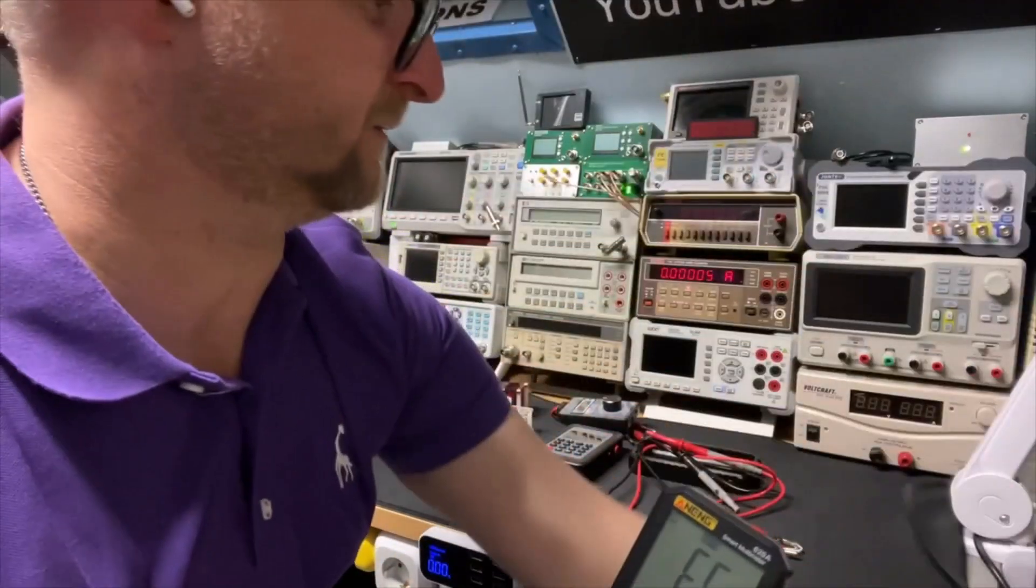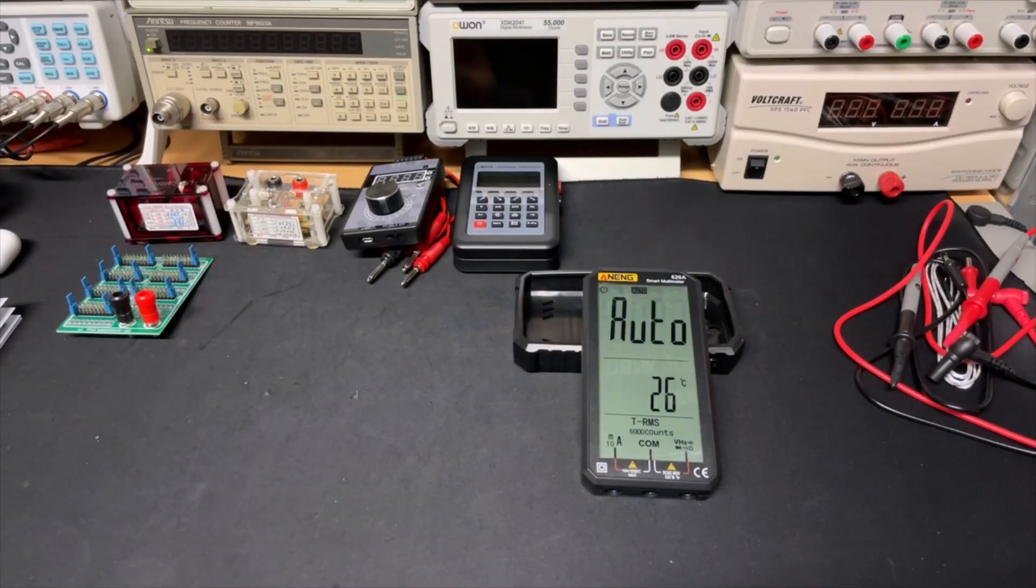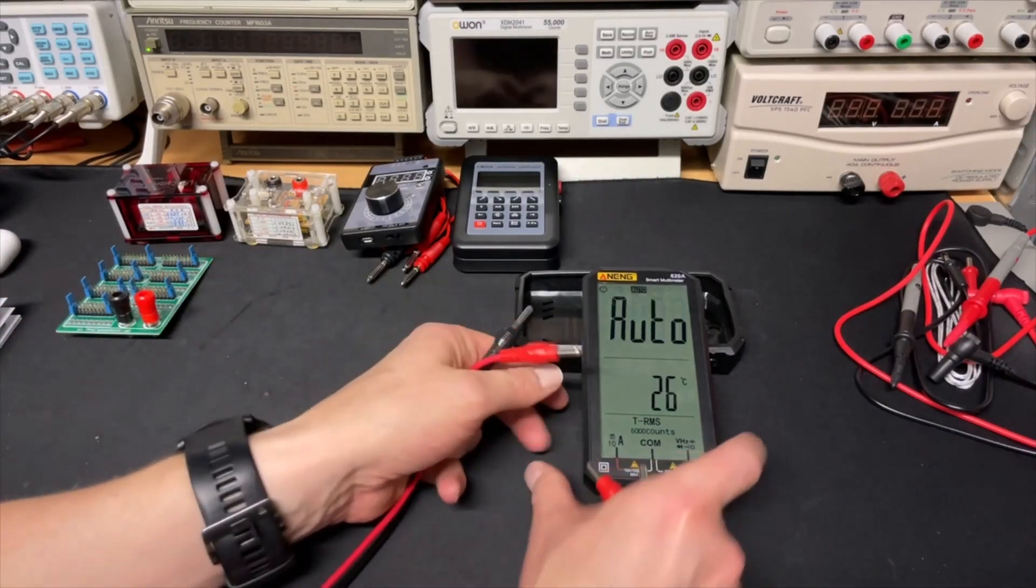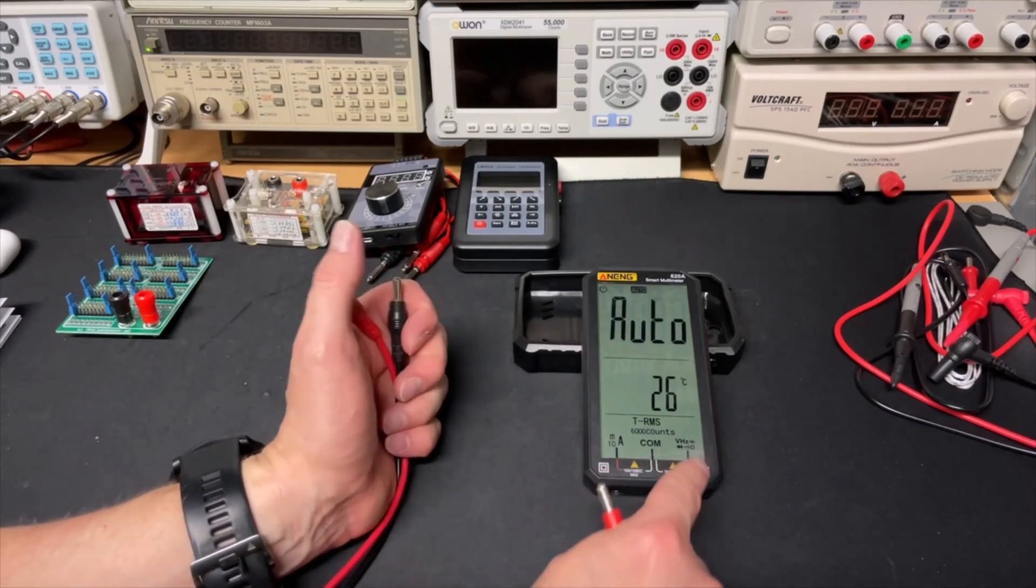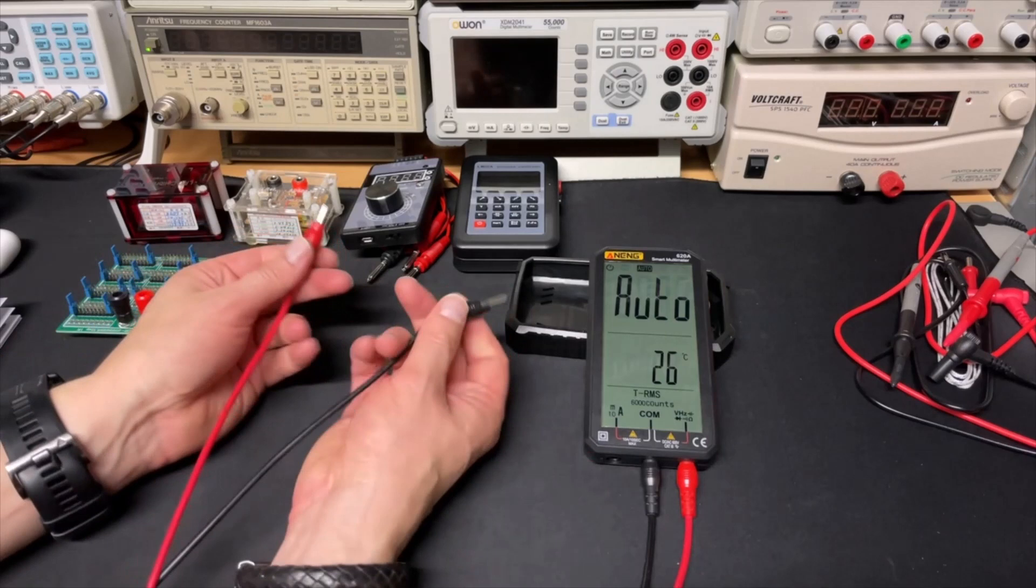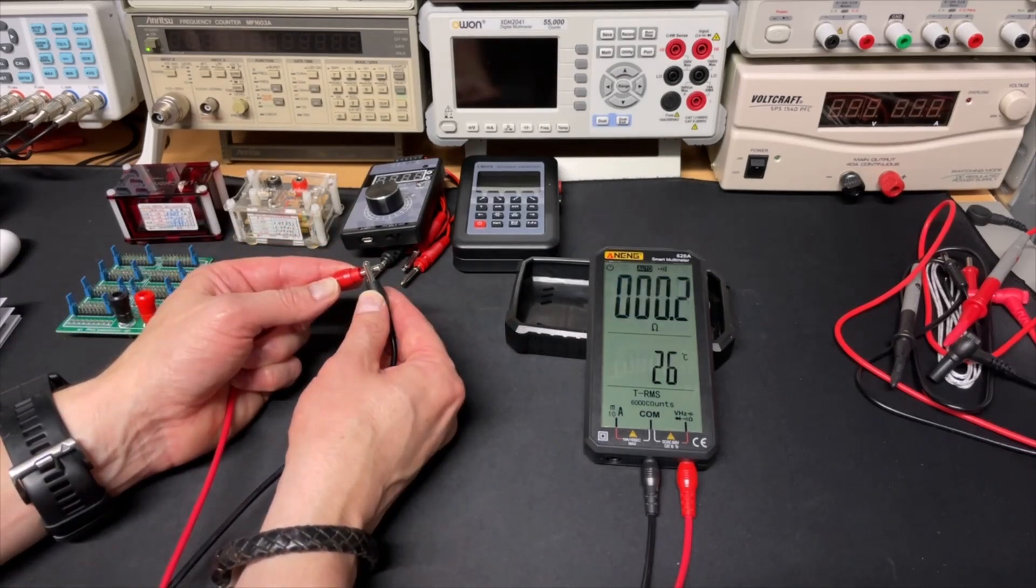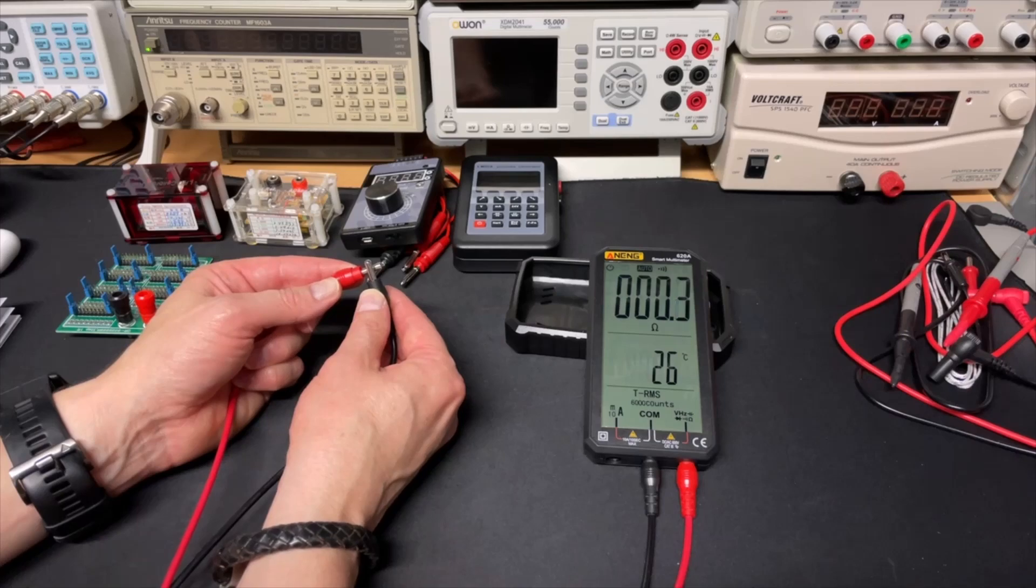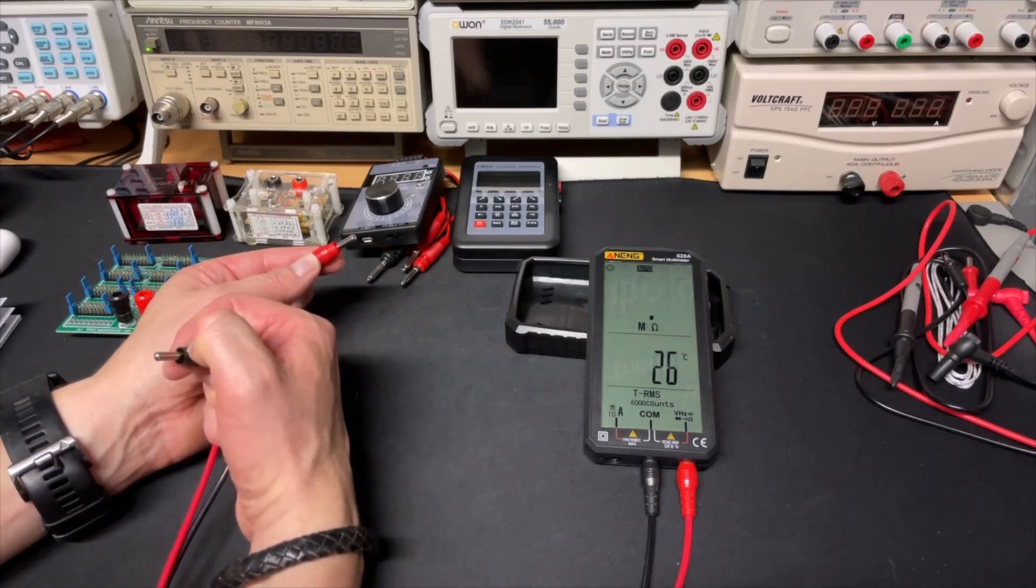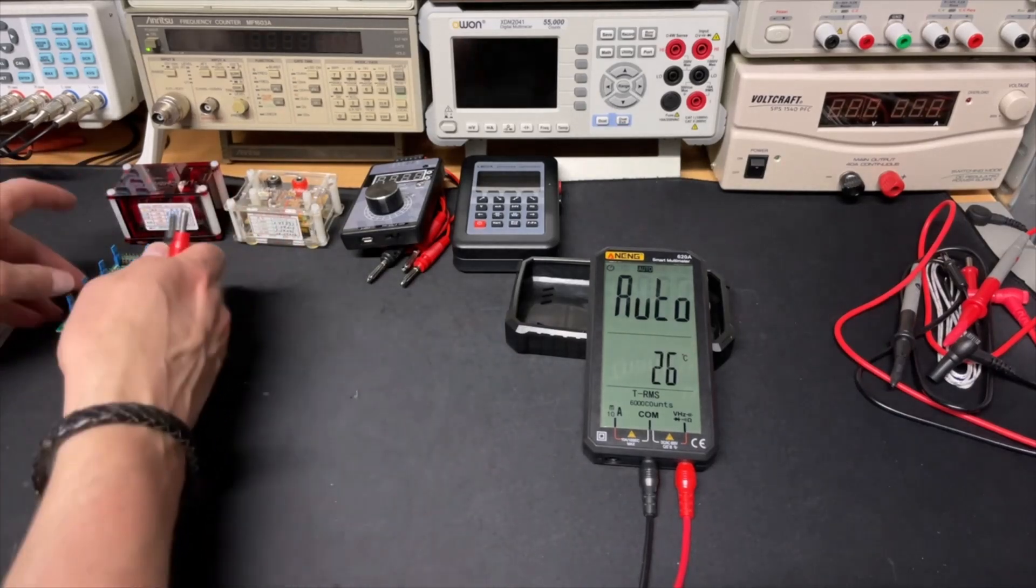Now let's see how auto is this auto mode. Of course the current is split from all the other functions, makes sense. Let me just short circuit it. It goes into beep mode and to the ohms, and it goes back. There is a little relay inside, I can hear it click.